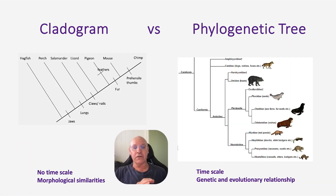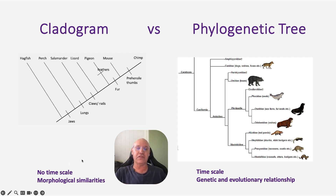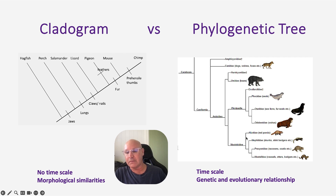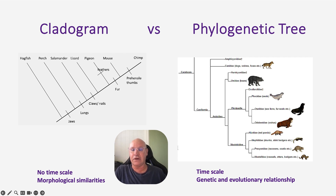A cladogram demonstrates change over time but has no actual time scale. Whereas with a phylogenetic tree, there is a time scale — it will generally tell you how many millions of years. The lines are of different lengths and stop at different points, indicating, for example, that the Canidae predates some other species or families because their lines start later and are longer.